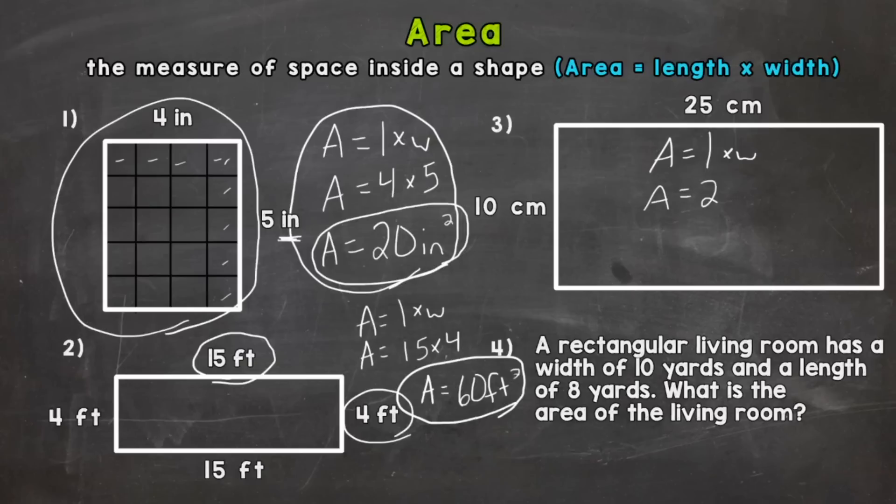I'm going to use 25 for the length times 10 for the width. Solve to find our area. 25 times 10 equals 250 and that is square centimeters. So area equals 250 square centimeters.